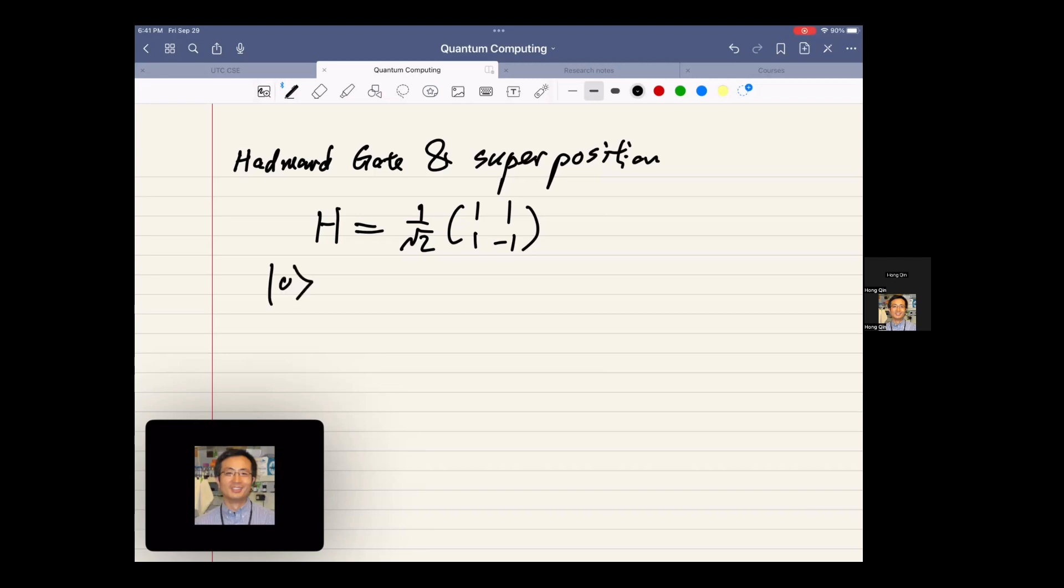Let's use the state of ket 0. Apply Hadamard gate to ket 0. And we have 1 over square root of 2, 1 and 1.